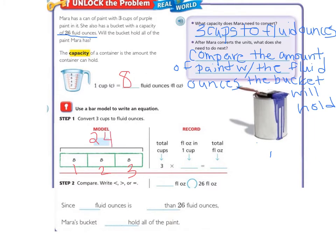Let's move over to the record. It says our total cups was 3 cups, times the fluid ounces in 1 cup, which we see here, 8 fluid ounces. And then our total fluid ounces that we figured out was 24 fluid ounces.